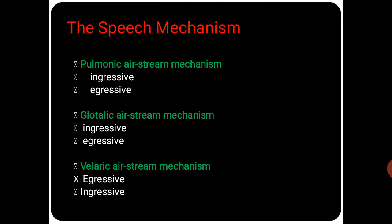Pulmonic airstream mechanism is where the initiator is the lung wall. We can classify this into two types: ingressive, meaning sucking in the air, and egressive, meaning puffing out the air. Pulmonic egressive airstream mechanism is the basis of almost all speech sounds in all languages. Pulmonic ingressive airstream mechanism might occur in some non-linguistic situations but very rarely in linguistic situations.